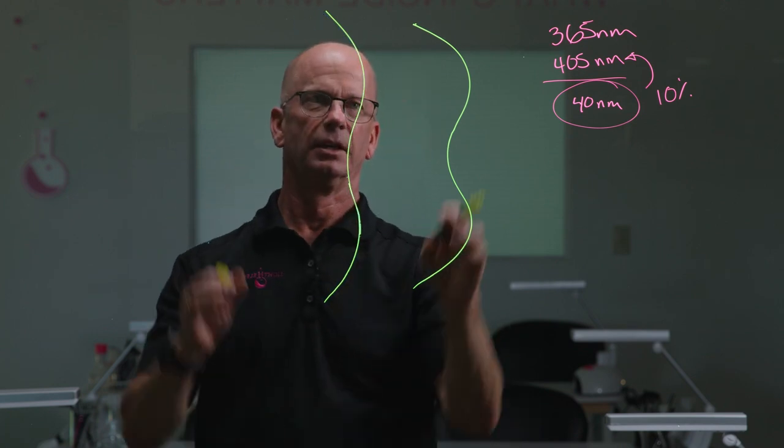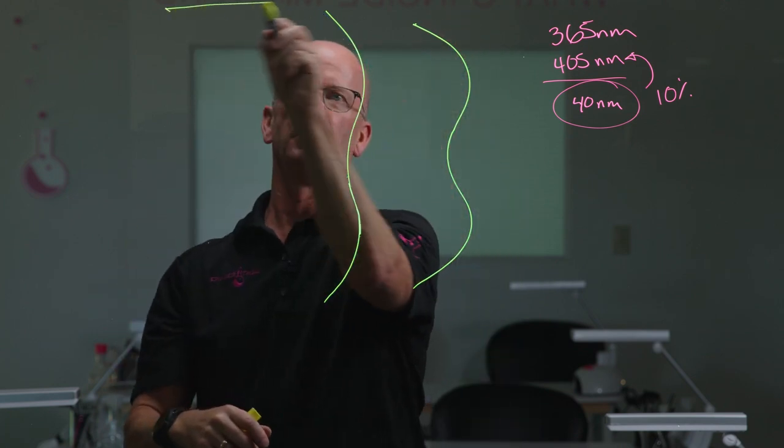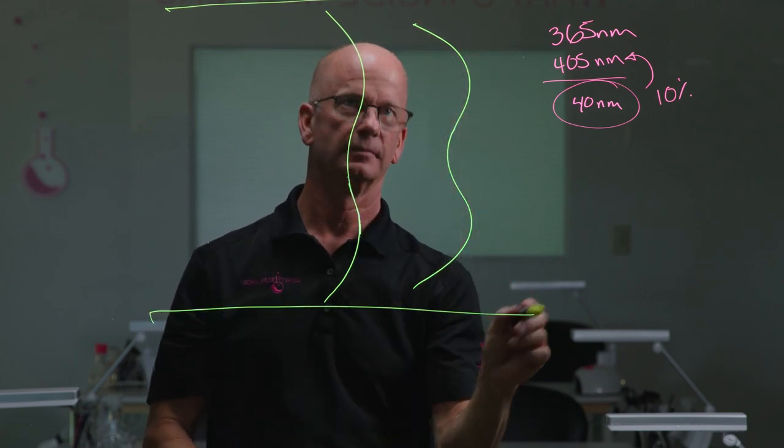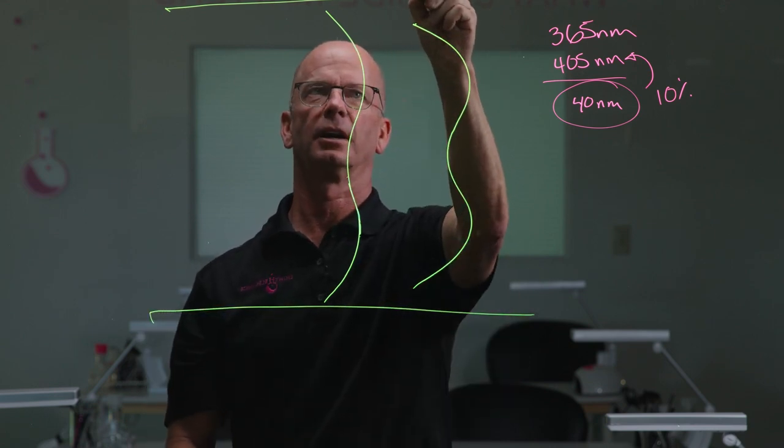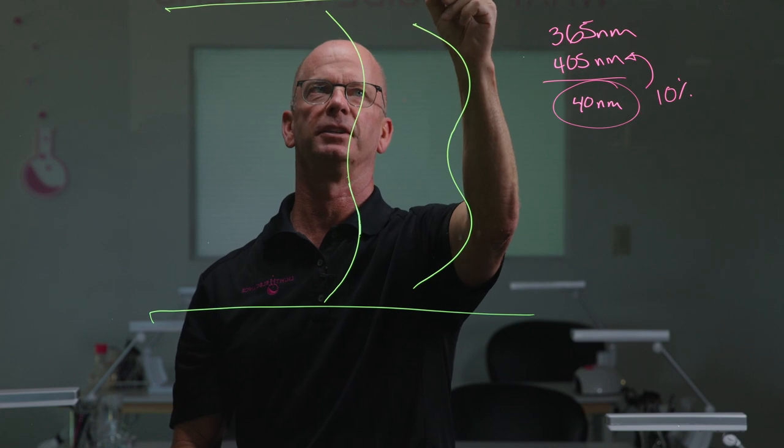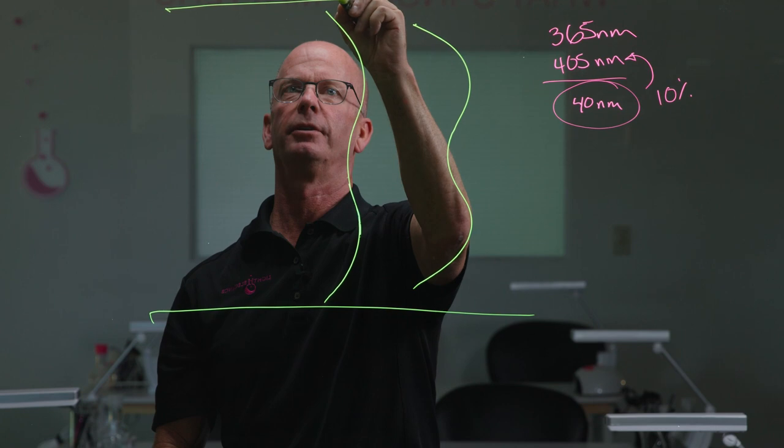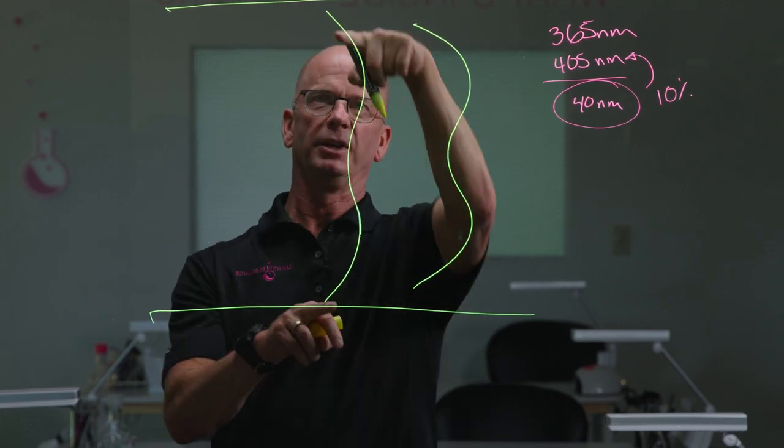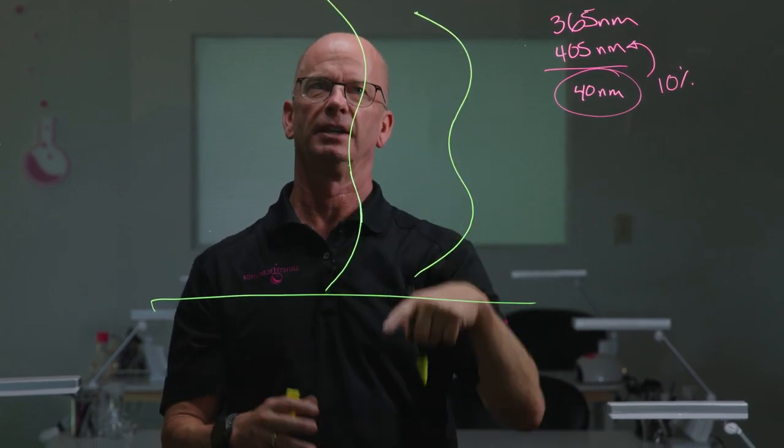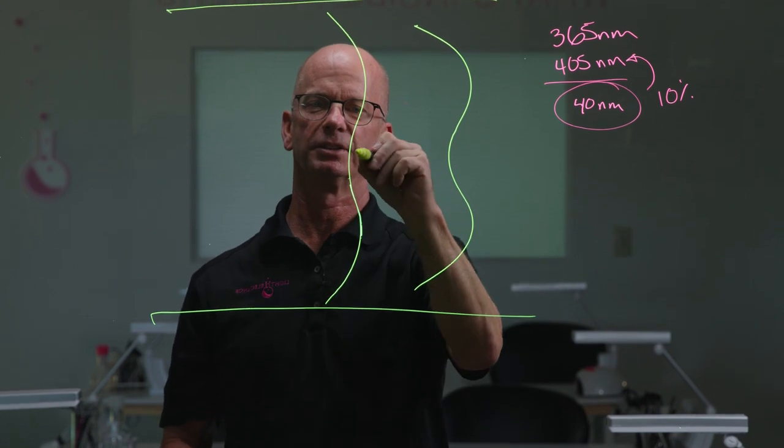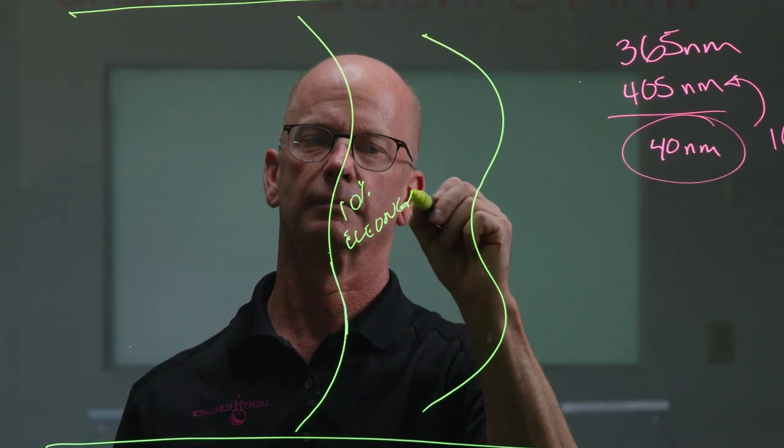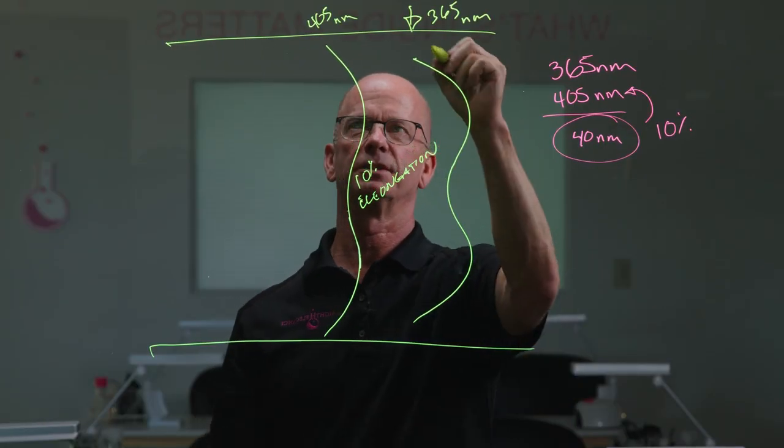And if we're curing a gel, and this is the photon coming through at 365, and this is a photon coming through at 405 nanometers. Because this is longer, it's elongated by about 10% compared to the 365 nanometer.